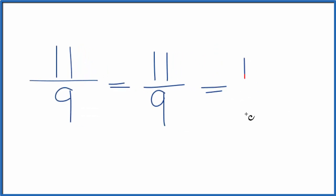9 goes into 11 one time with 2 left over. Bring the 9 across and 11 ninths equals 1 and 2 ninths. That's our mixed number.